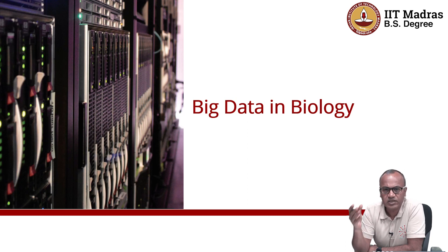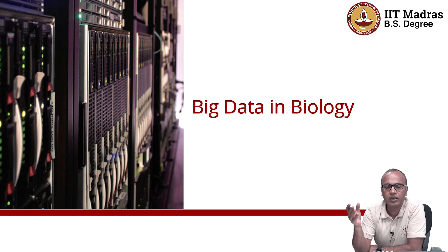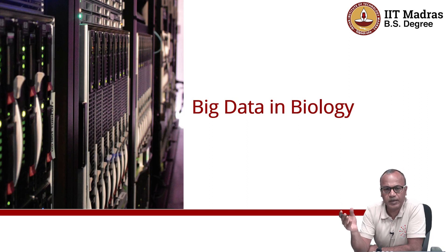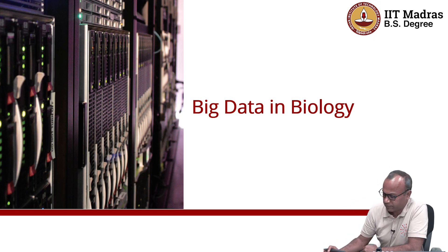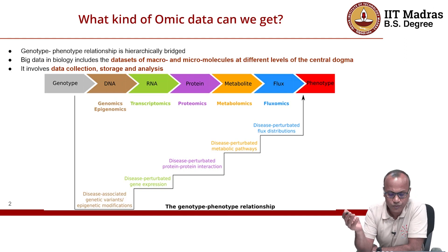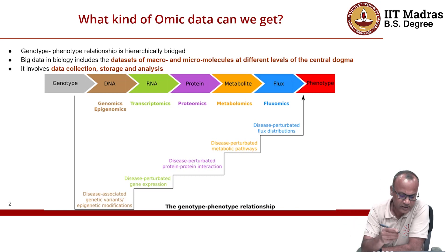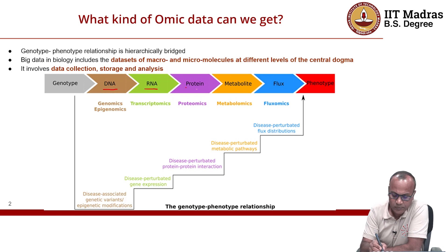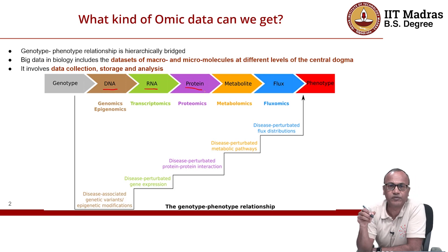At each level of information — DNA, RNA, protein — what does each level give in terms of big data, and how we can actually understand and process this big data will come later in the course. To give a brief overview: there is a DNA level, there is an RNA level, there is a protein level — these are the three steps of the central dogma.